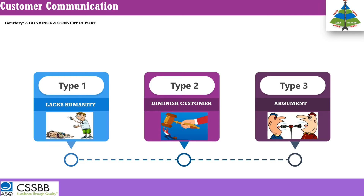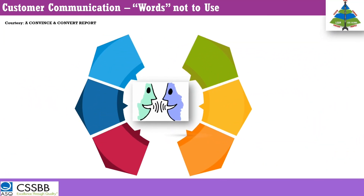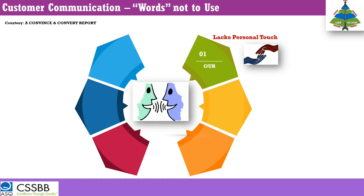These are the categories that should be avoided in professional communication. Let's look at what specific words to avoid in customer communication. The first one is 'our' — 'our company,' 'our process,' 'our services.' When you use 'our' while the customer is complaining, you are creating a distance between the customer and yourself. It removes the personal touch. The moment you use 'ours' or 'our policy,' you are eliminating the customer and not including them.